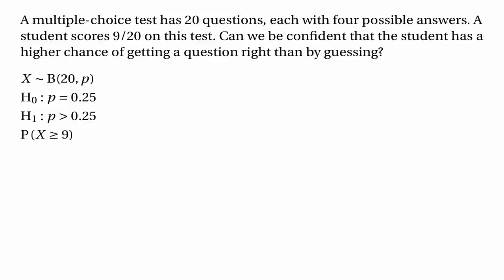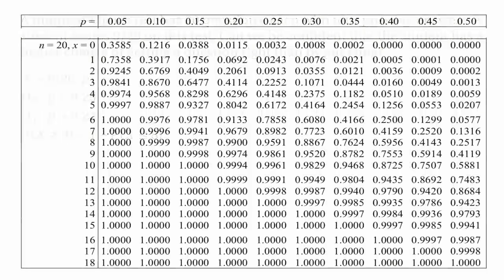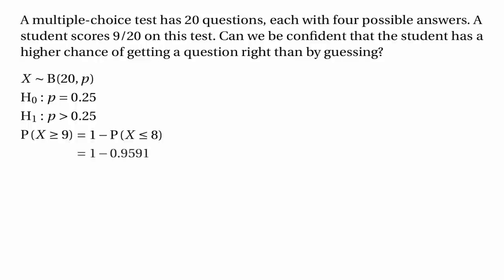What we have to find out is the probability of the student getting nine or more answers right, because we ask ourselves what's the probability of getting an outcome like nine — where by 'like nine' we mean nine or more. So we find the probability that the student gets nine or more questions right assuming that the null hypothesis is true. We do that by computing one minus the probability that x is less than or equal to eight, because we can only look up that sort of probability in the tables. From the table where n equals 20 and the column headed by p equals 0.25, scanning to where x equals eight, we find the probability 0.9591. So the probability is 1 minus 0.9591, which is 0.0409.